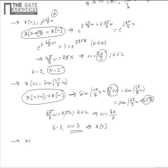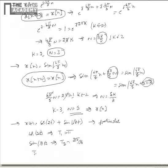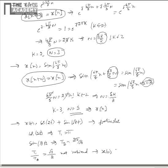Consider the signal X(t) = cos(2t) + sin(√3 · t). We have to check if X(t) is periodic. The signal cos(2t) has period T1 = π, and sin(√3 · t) has period T2 = 2π/√3. The ratio T1/T2 = π / (2π/√3) = √3/2, which is not rational. Therefore, the given signal X(t) is not periodic.